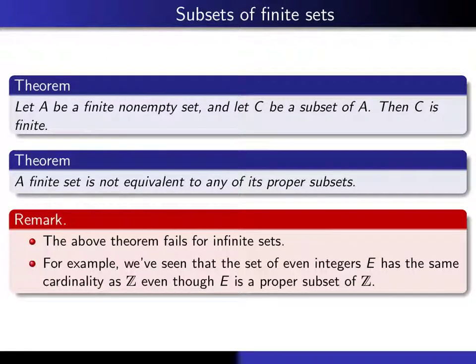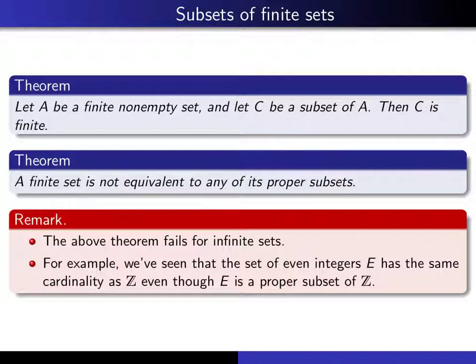I've written it in red to emphasize that this theorem is false for infinite sets. It's very possible for an infinite set to have a proper subset with the same cardinality. We saw an example earlier: if E denotes the set of even integers, that is a proper subset of all integers, and yet they have the same cardinality. This is typical for infinite sets — whenever you have an infinite set, there's always a proper subset with the same cardinality. But that's definitely not the case for finite sets.